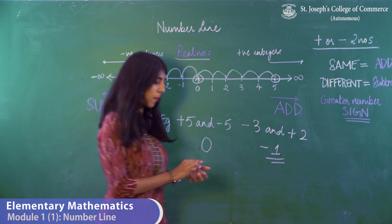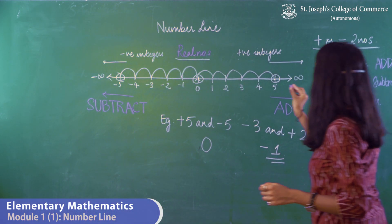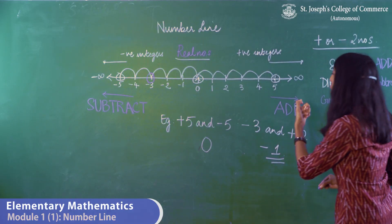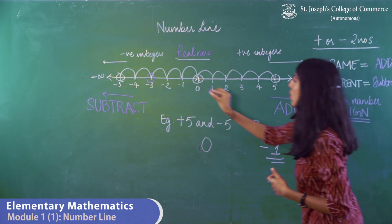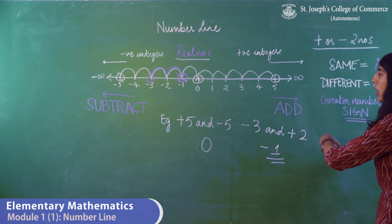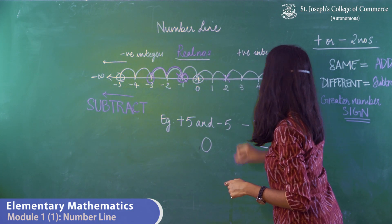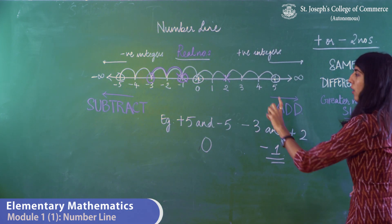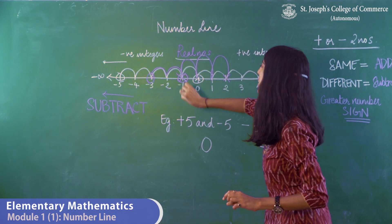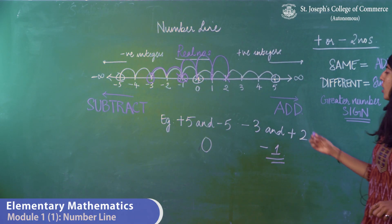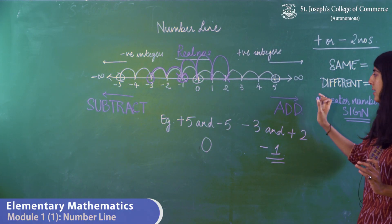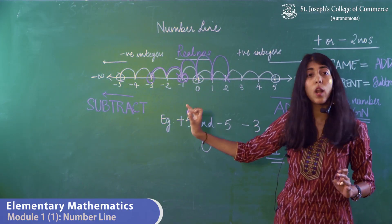Let's try solving minus 3 and plus 2. Minus 3 is plotted on the number line. Since the next number is plus 2, I move two spaces to the right and end up at minus 1, which is the answer. If I start with plus 2 instead, and the next number is minus 3, I subtract 3 spaces — going 1, 2, and 3 — and I still end up at minus 1. Whichever number you start with, you'll end up at the same answer.